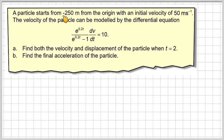A particle starts from minus 250 meters from the origin with an initial velocity of 50 meters per second. The velocity of the particle can be modeled by the differential equation e to the 0.2t divided by e to the 0.2t minus 1 times dv by dt is equal to 10. Find both the velocity and the displacement of the particle when t is equal to 2 and find the final acceleration of the particle.